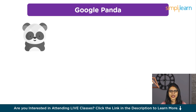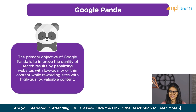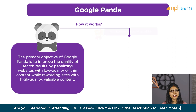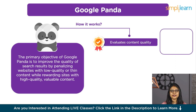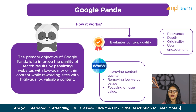Google Panda is a search algorithm introduced by Google in February 2011. Its primary objective is to improve the quality of search results by penalizing websites for low-quality or thin content, while rewarding sites with high-quality and valuable content. The Panda algorithm evaluates content quality based on factors like relevance, depth, originality, and user engagement. It looks for thin, shallow, or duplicate content that lacks value. Quality signals include spelling errors, excessive ads, duplication, and user metrics. Low-quality sites may see ranking drops and decreased traffic. Sites can recover by improving content quality, removing low-value pages, and focusing on user value.